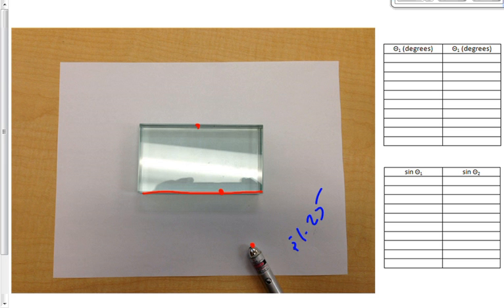That's going to represent the boundary between the air and the glass. Now, what you're going to do is actually take the block away. Take a ruler and draw a line that joins these two dots together. Then draw another line that joins these two dots together.